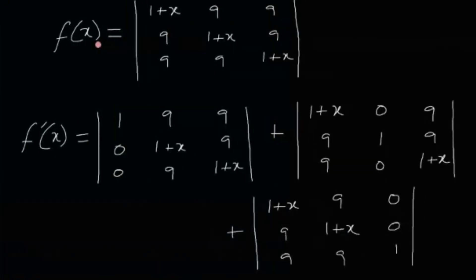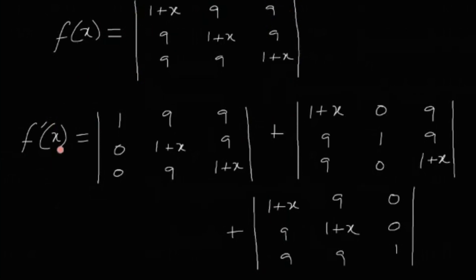One thing you can do is just expand the determinant and solve using calculus, but there is a better method. Differentiating a determinant is actually quite easy. f'(x) is computed by differentiating each column separately. First, we differentiate only the first column while keeping the remaining columns the same. The derivative of 1+x is 1, so the first column becomes [1, 0, 0], and the second and third columns remain unchanged.